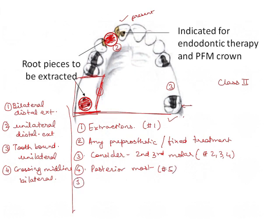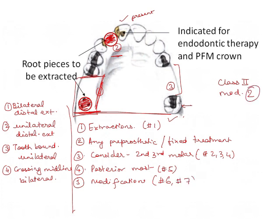The other edentulous areas are designated as modification spaces. We have two modification spaces. Rule Number 6 states they are designated by the extent, not by the number of teeth missing. Rule Number 7 — so this becomes Class 2 Modification 2.